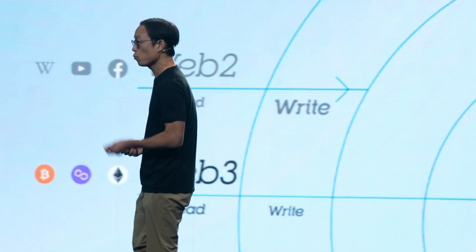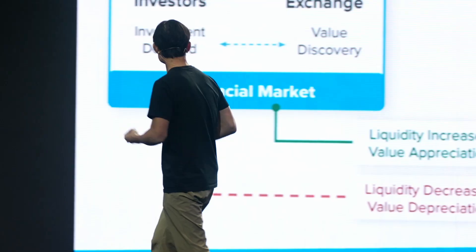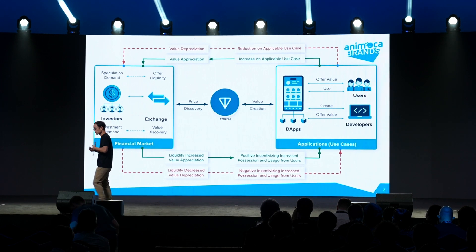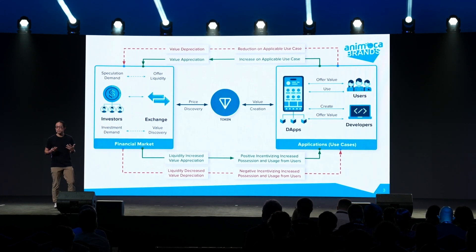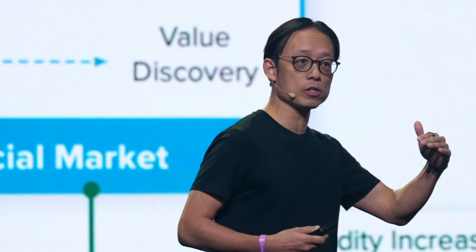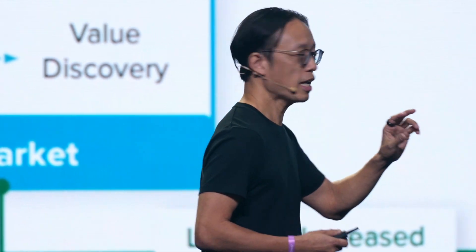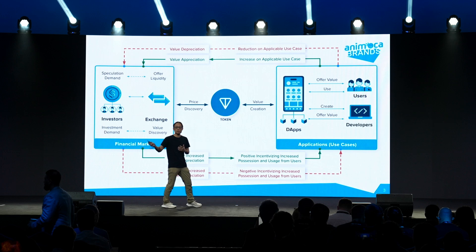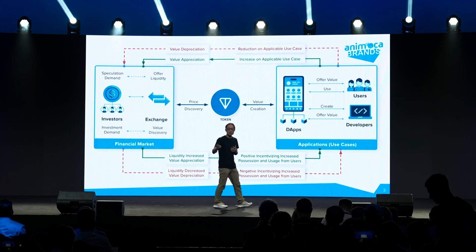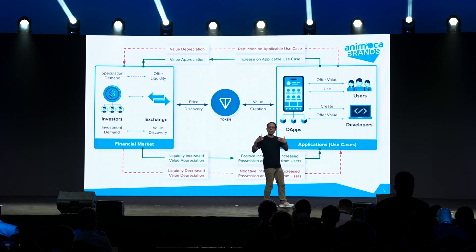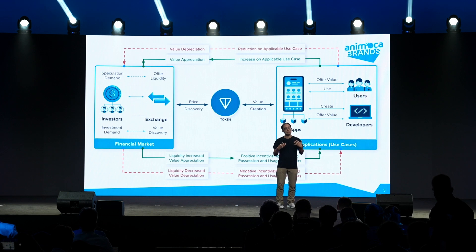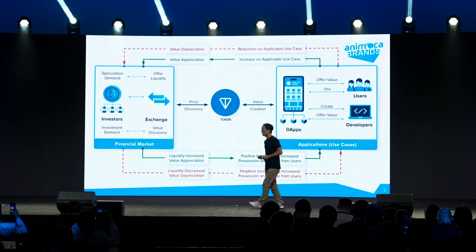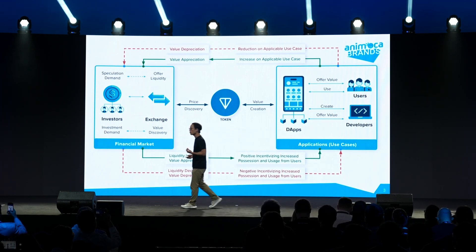When you think about what it is that you actually own, the token is a representation of a network effect. Whether this is Ton as a token itself or whether this is you launching tokens on Ton, you're building network effects that have both utility in the application use case — maybe like a game — but also specifically in the financial side. Never before until Web3 did we have a way in which these two systems integrate together and adjoin in these network effects.